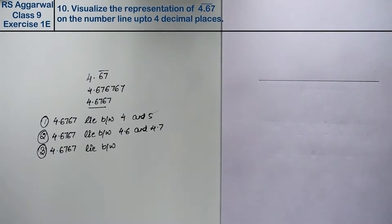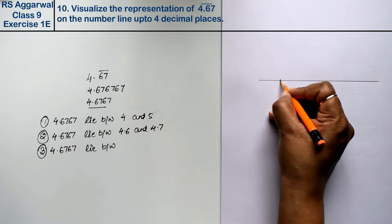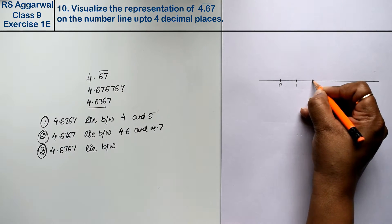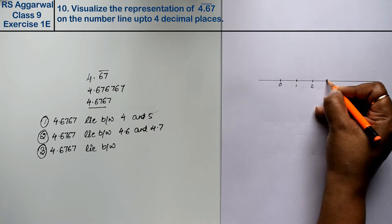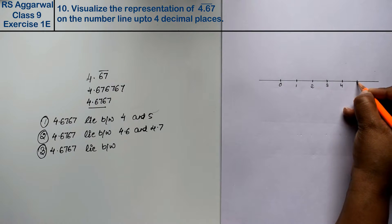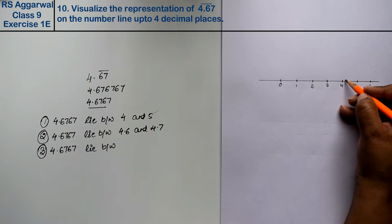So for that, this is 0, 1, 2, 3, 4, 5, and 6. So you will put 4 or 5 in between. That means you will put it here, right friends?